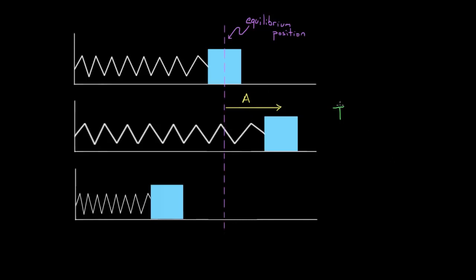But it's a little less obvious when it comes to the period. What does the period depend on? Who or what determines the period? Maybe it depends on the amplitude, so let's check. If I pulled this back farther — if I increased the amplitude — will that change the period of this motion?